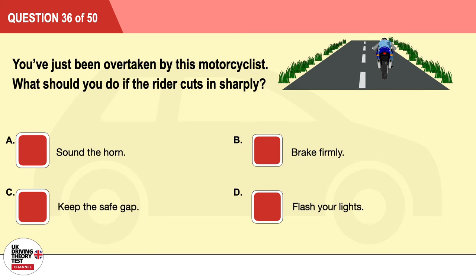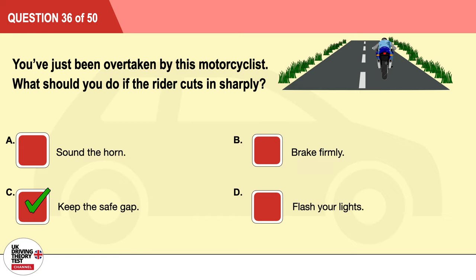Question 36: You've just been overtaken by this motorcyclist. What should you do if the rider cuts in sharply? A: Sound the horn. B: Brake firmly. C: Keep the safe gap. D: Flash your lights. The correct answer is C: keep the safe gap.